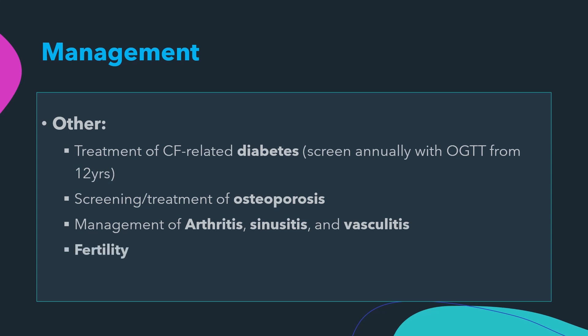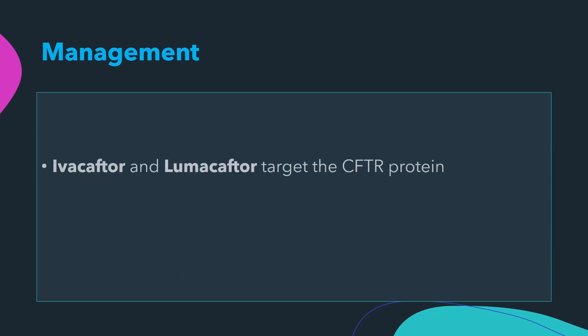Male infertility is due to absence of the vas deferens; fertility can be sought by microaspiration of sperm and in vitro fertilization. Genetic counseling should be done in all cases. Ivacaftor and lumacaftor are two drugs now specifically available for the management of cystic fibrosis — they target the CFTR protein. Ivacaftor is a CFTR potentiator.